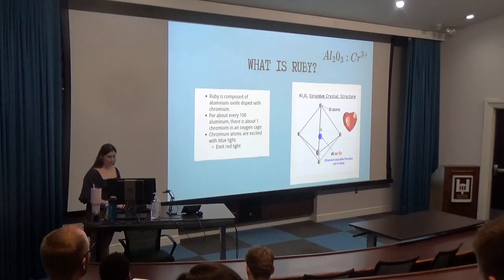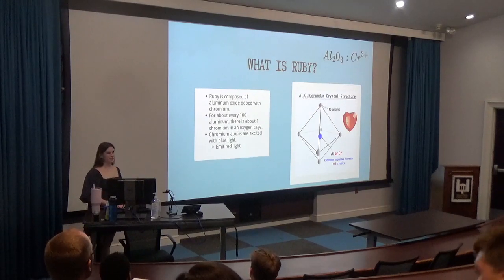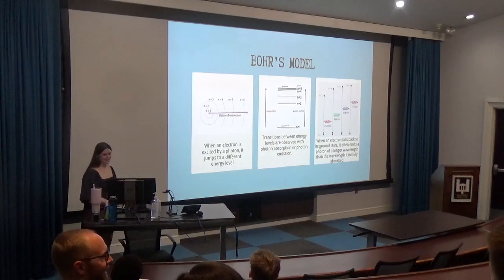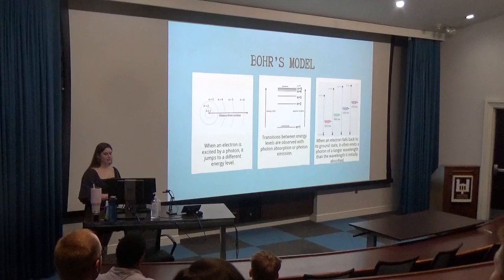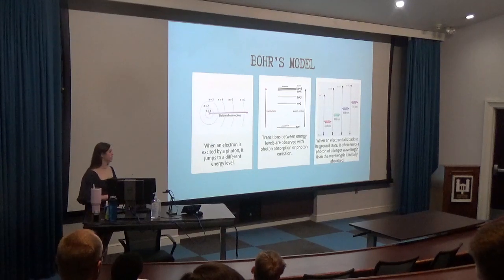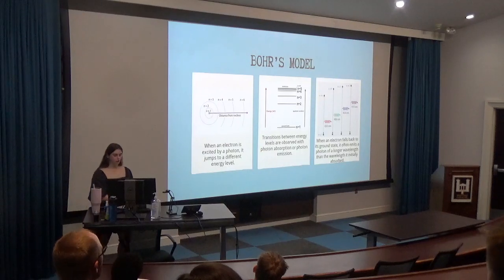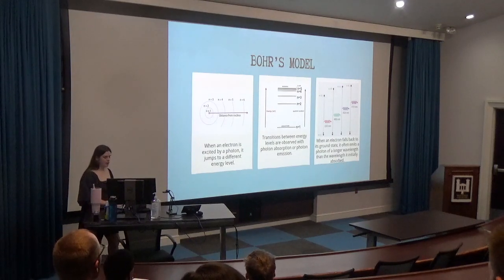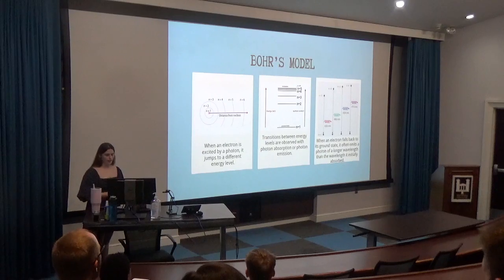Let me remind you of Bohr's model from basic chemistry. Bohr's model is the basic idea of how electrons move between energy levels. These transitions between energy levels can be observed through photon absorption and emission. When an electron falls back down to its ground state, it is typically a longer wavelength than the photon that excited the atom — thus energy was lost. What we are doing is looking at the wavelengths of light coming in and out to tell us about these energy levels.